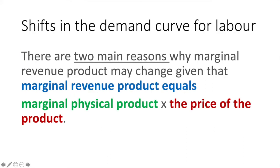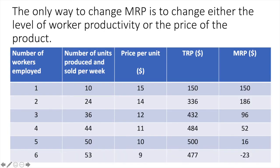The firm's demand curve for labour can also shift. There are two main reasons why marginal revenue product may change. Given that marginal revenue product equals marginal physical product times the price of the product, the only way to change MRP is to change either the level of worker productivity or the price of the product.